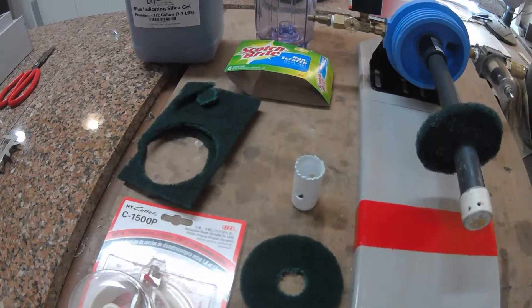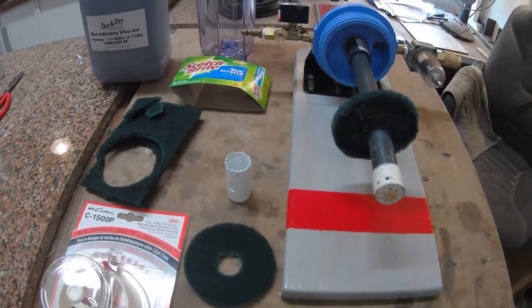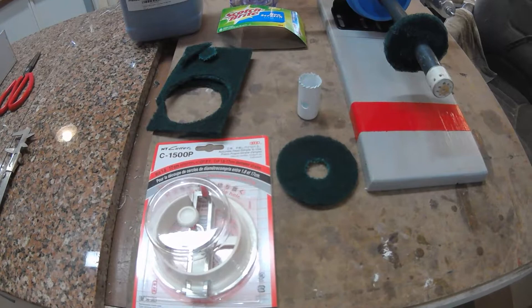Then I took a hole saw approximately the size of the pipe and tapped it with a hammer and got the inner lumen.